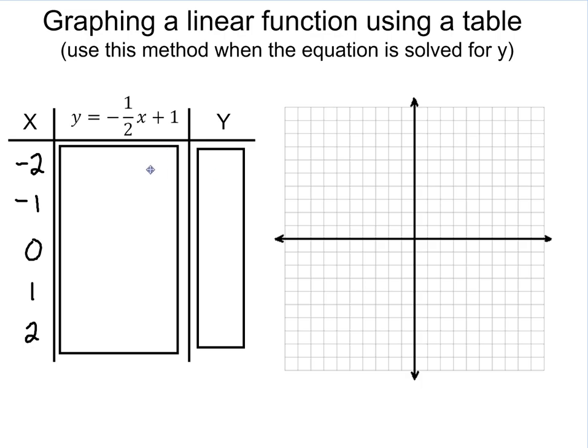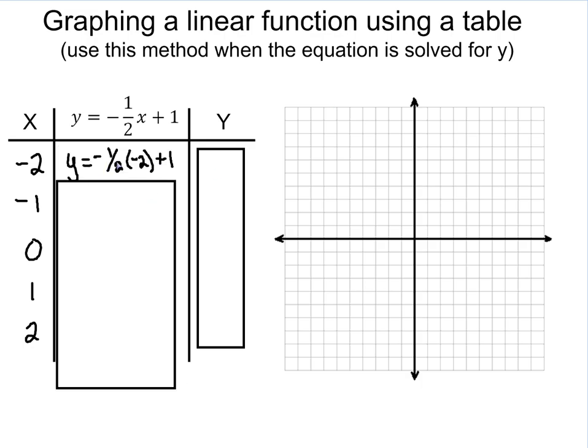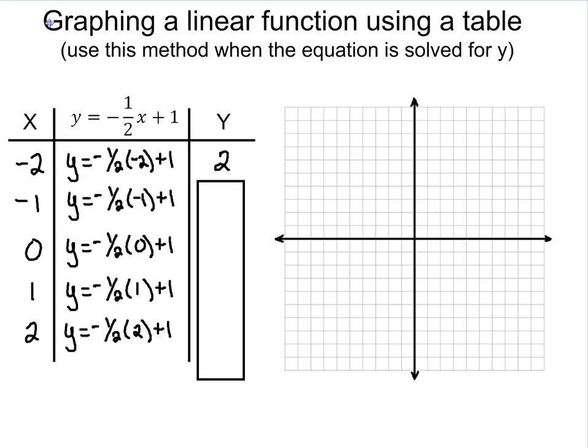And even though this one has a fraction, the steps still stay the same. You have negative 1 half times negative 2 plus 1, which in this case gives you 2. We're going to continue these values all the way down. So you have negative 1 half times negative 1, negative 1 half times 0, negative 1 half times 1, and negative 1 half times 2, all plus 1.